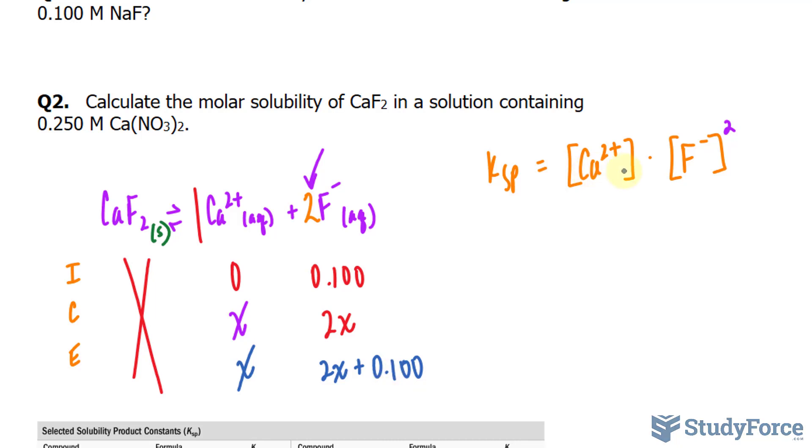I'll substitute these expressions into where they belong in my Ksp equation. So I have, for calcium 2+, X. And for fluoride, I have 2X plus 0.100, and that is being raised to the power of 2.